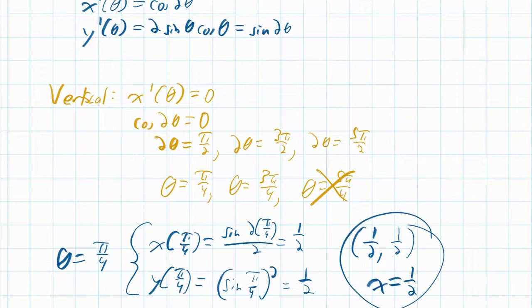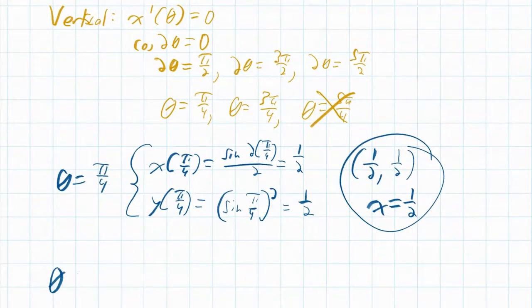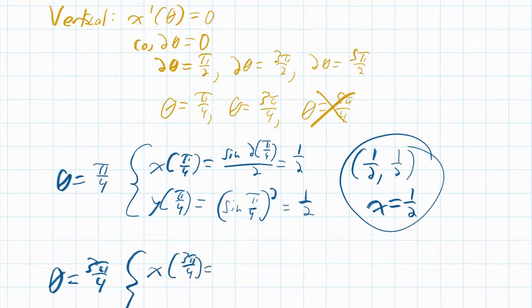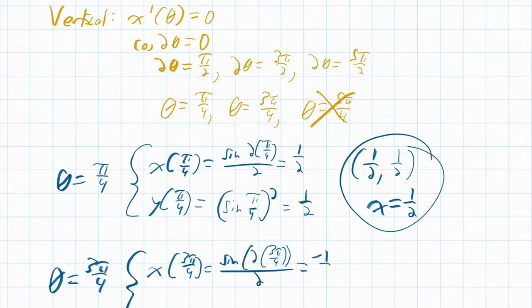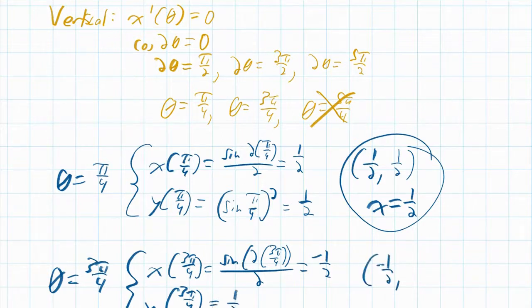At θ = 3π/4: x(3π/4) = (1/2)sin(3π/2) = −1/2, and y(3π/4) = sin²(3π/4) = 1/2, giving ordered pair (−1/2, 1/2) with vertical tangent at x = −1/2.